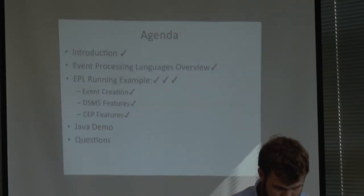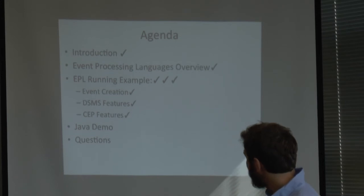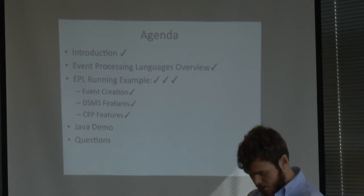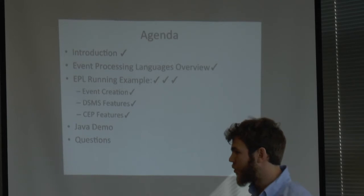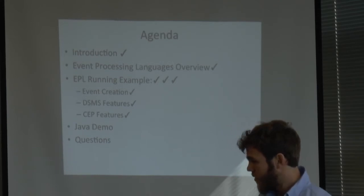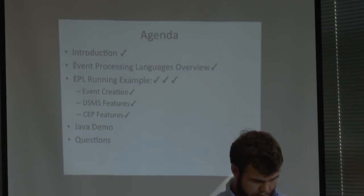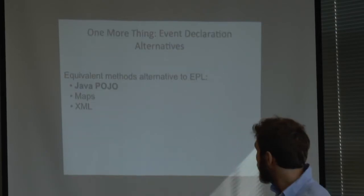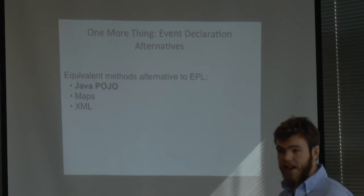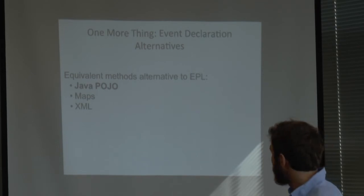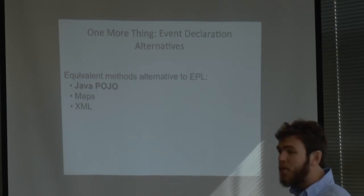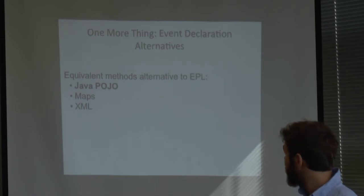That was the final part of the EPL language. Now let's do the Java demonstration and go through the code to show the APIs. One more thing first: event declaration alternatives. As I showed you, you can create events through the create schema clause, but this is not the only option. Events can be represented as plain old Java objects, and also as maps - so you can keep the schema very shallow and defined over time, though it wastes space and memory. The standard XML representation is also still available, which is the common way to communicate for publish-subscribe systems.